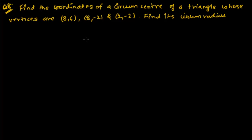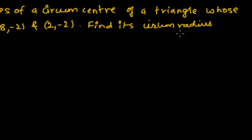Hi friends, here is another problem in coordinate geometry related to the distance formula. The question says: find the coordinates of the circumcenter of a triangle whose vertices are (8, 6), (8, -2), and (2, -2). Find its circumradius also.